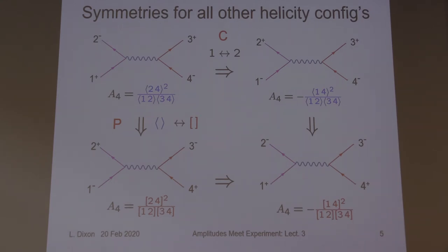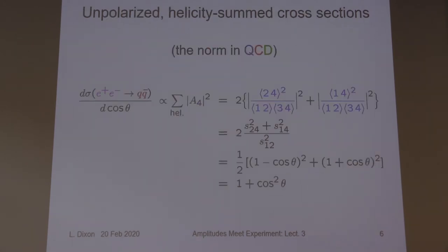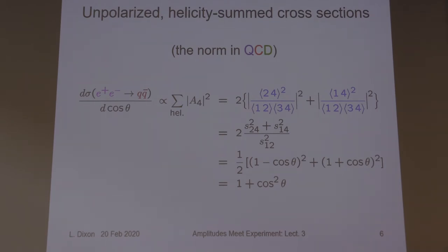We can also combine these two operations to get the fourth possibility. Usually in QCD, you don't have any real good control over the spins of the quarks or gluons. Most proton collisions — the protons are unpolarized, and therefore the constituents, quarks and gluons, are unpolarized. It's almost impossible to measure the spin of an outgoing jet, so at least for the QCD side, you pretty much always have to sum over the quark and gluon helicities in practice.